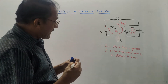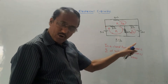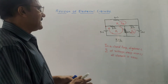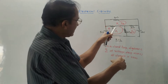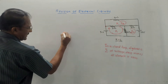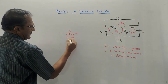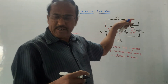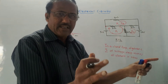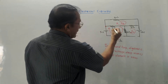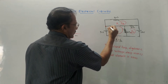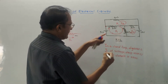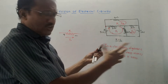The statement of KVL: in a closed loop or mesh, the algebraic summation of voltage drops across all elements is zero. Depending on the direction of loop currents, mark plus and minus notations across each resistance. For the 3-ohm resistance, current I1 moves left to right, so mark plus then minus. For the 2-ohm, I1 flows downward, so plus then minus. Voltage source polarities are fixed. For I2 flowing through the 2-ohm, mark plus then minus accordingly.